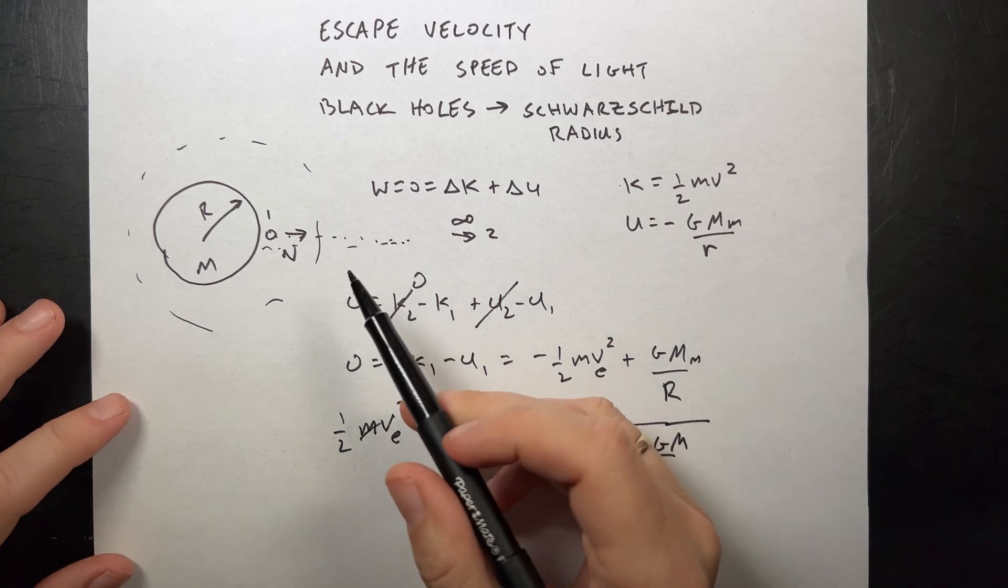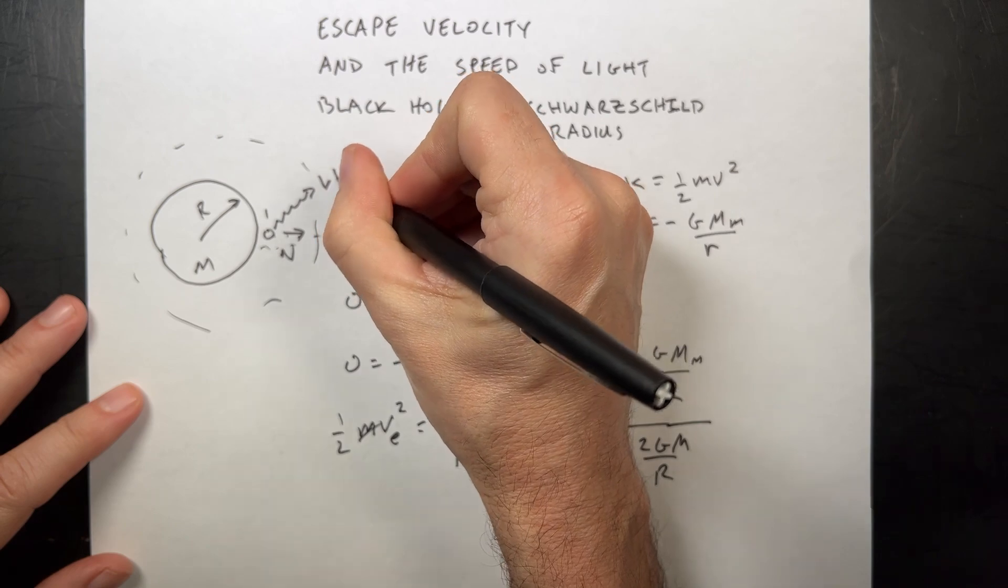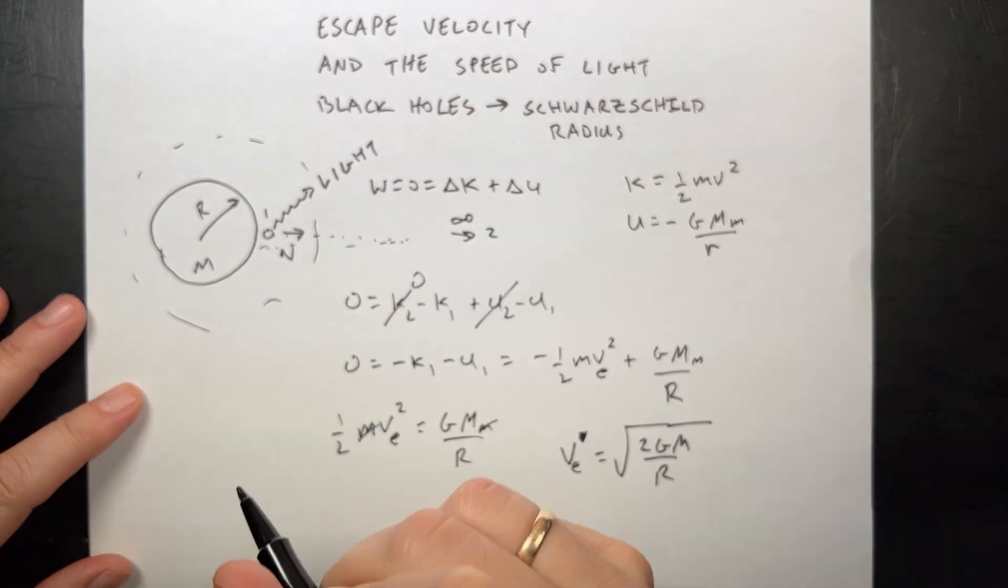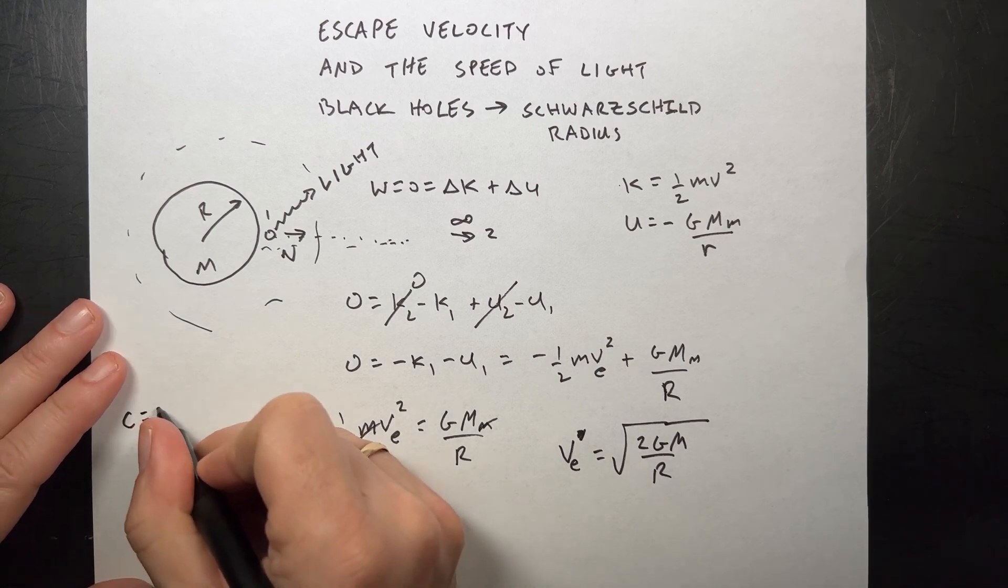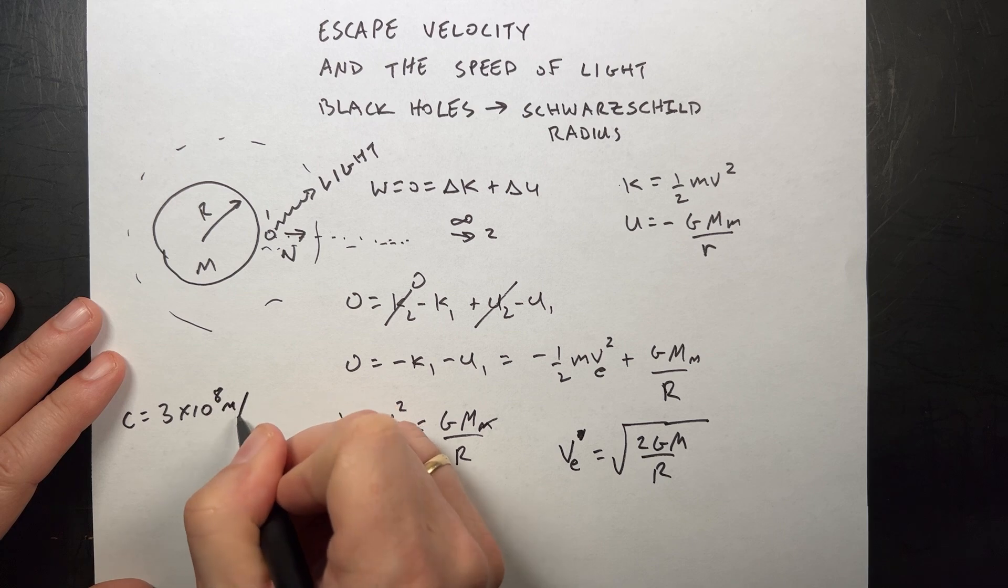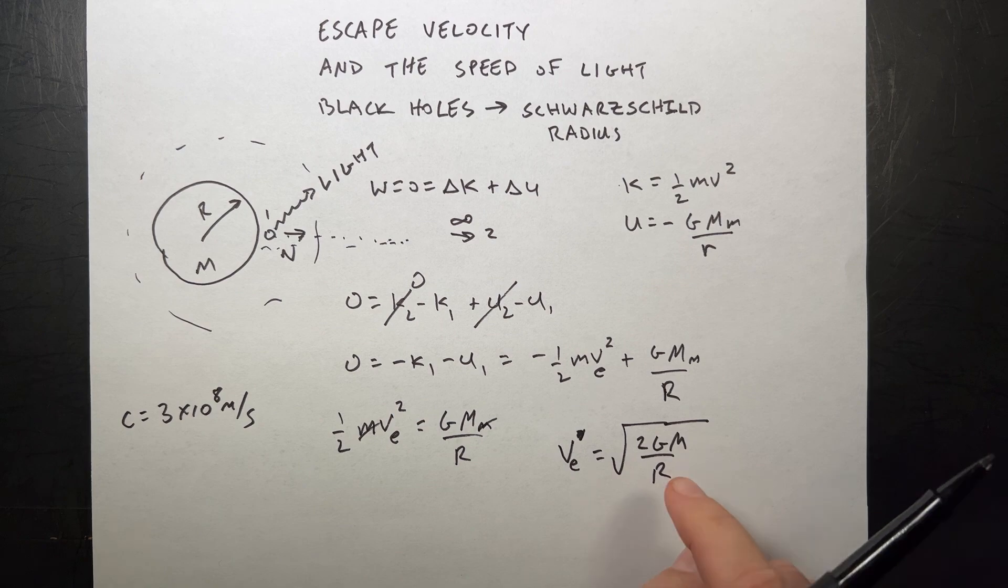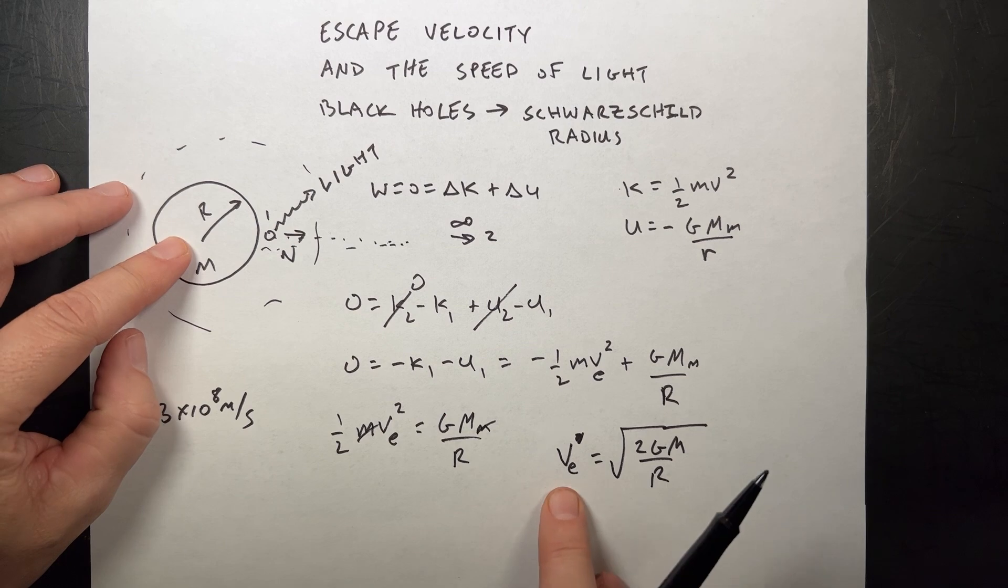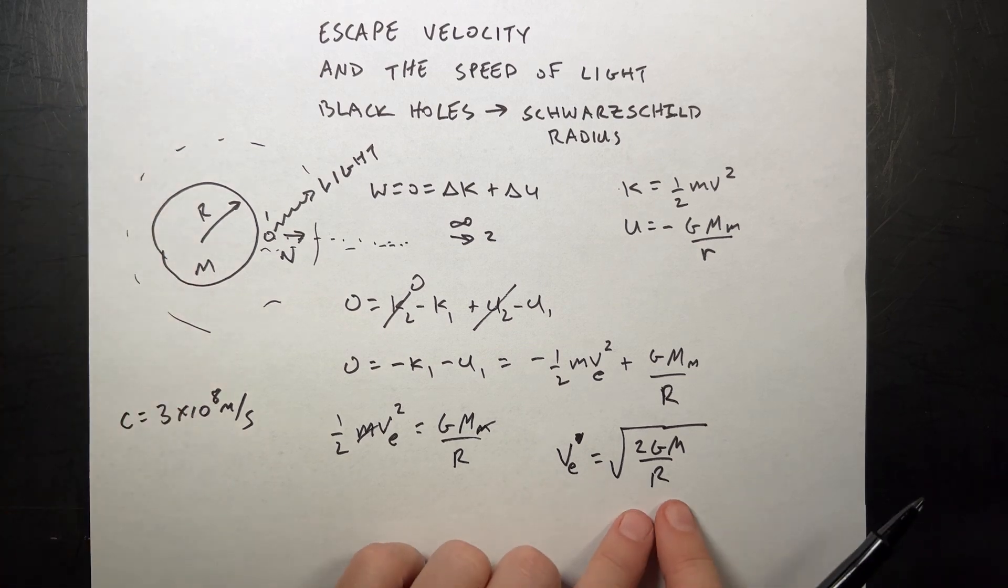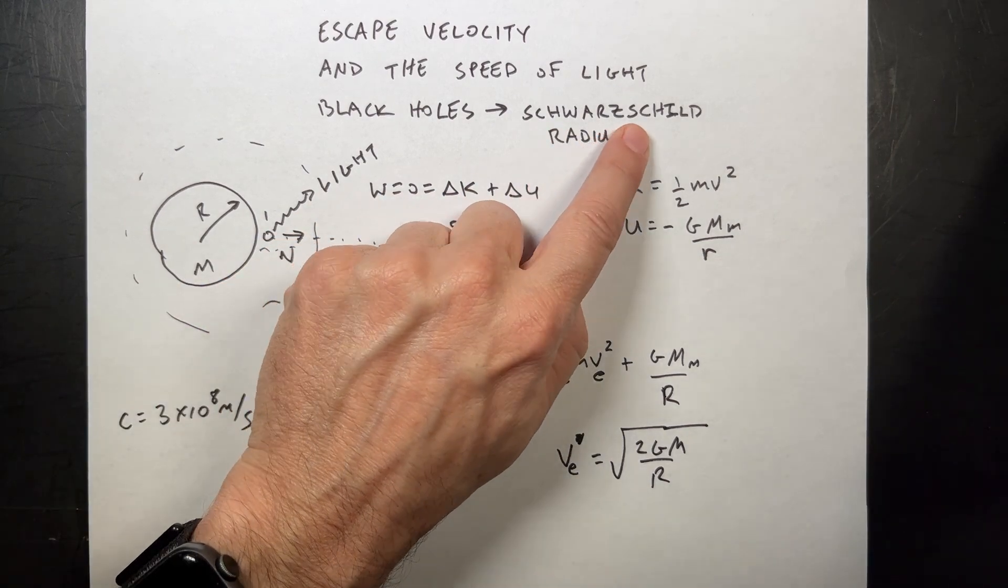But now what if I have, instead of a ball, what if I have light? Light travels at the speed of light. So c is about three times ten to the eighth meters per second. So let's put that in here and find out how big... You'll notice here that as I get a smaller and smaller planet, as r gets smaller, the escape velocity gets larger. At what point would the escape velocity be equal to the speed of light? That's what we want to solve. And that's the Schwarzschild radius.